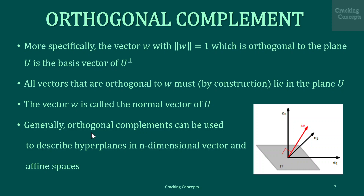A hyperplane is a subspace whose dimension is one less than its surrounding space. For example, if the space is three-dimensional then its hyperplane is a two-dimensional plane. An affine space is a geometric structure that generalizes some of the properties of Euclidean space such that it doesn't have a fixed origin and no vector in it is uniquely associated to a point — instead there are only displacements or translations between any two points. In this diagram we see the plane U in a three-dimensional vector space described by its normal vector w, which spans its orthogonal complement.